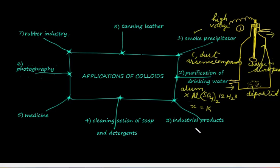A large number of industrial products are colloids, say for example paints, ink, synthetic plastics, cement, graphite used as lubricants.